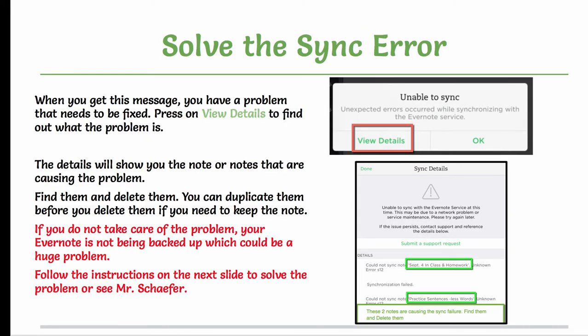Sometimes you get a sync error and it says it is unable to sync. You really want to press on View Details to find out what's going on. In this case, there is a September 4th in-class homework that could not be synced. What you want to do is find them and delete them. You can duplicate them before you delete them if you need to keep the note. But if you do not take care of the problem, your Evernote is not being backed up, which could be a huge problem.